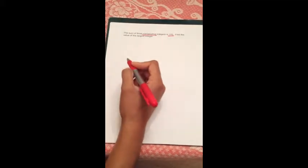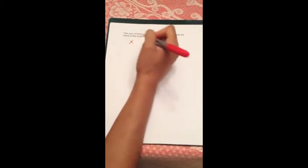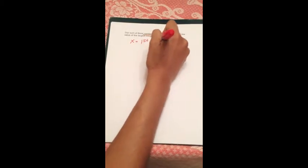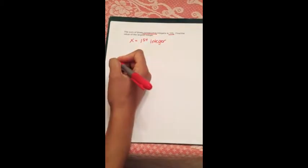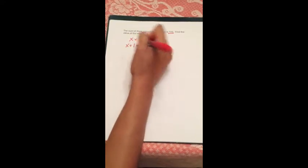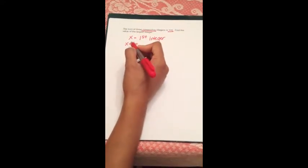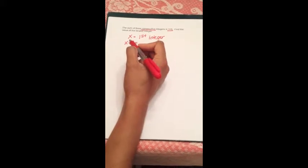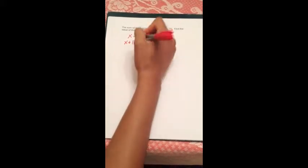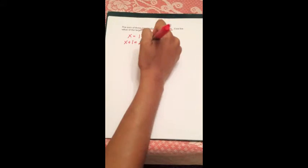So we first have to set it up. We're going to let the first integer equal x. Our second integer is going to equal x plus 1, because if we're looking for something consecutive, in order to reach the next number in the series, we have to add 1. So this is going to be our second integer.